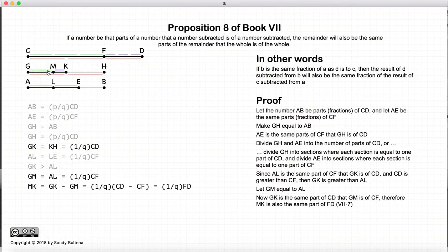What we have left over is GK minus GM. Well, since they are the same fraction of CD and CF, GK minus GM will be the same fraction as the difference between CD and CF.